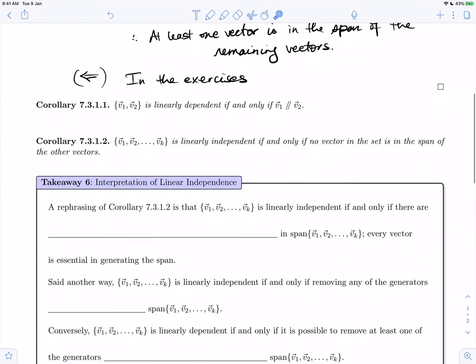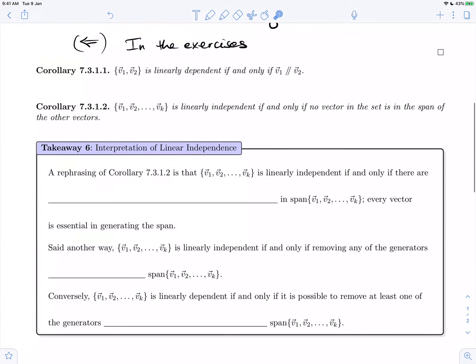So let's go and fill out the takeaway, which is the geometric interpretation with respect to span of linear independence. So a rephrasing of corollary 7.3.1.2 is that this set of vectors v1 through vk is linearly independent if and only if there are no redundant generators in the span, meaning every vector is essential in generating the span.